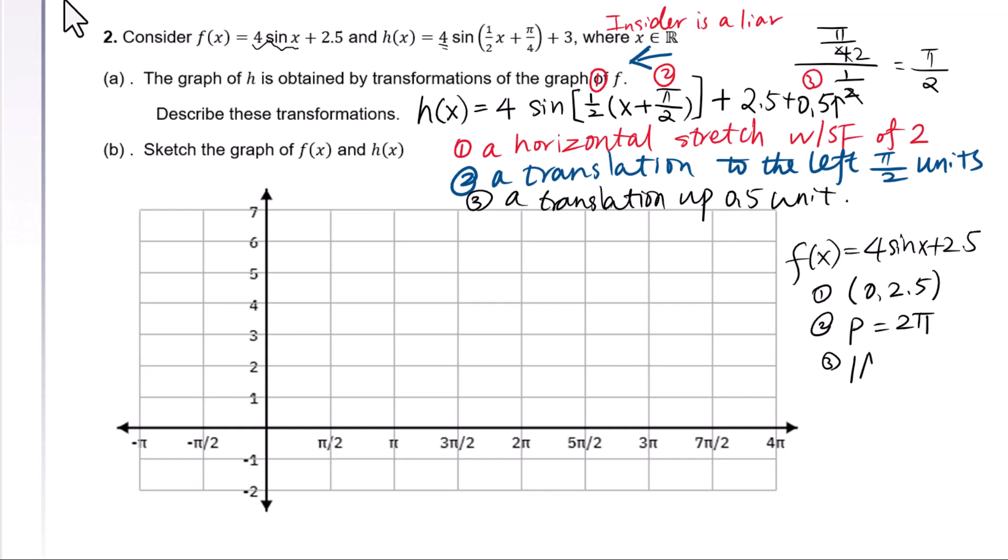Minimum equals 2.5 - 4 = -1.5. Maximum equals 2.5 + 4 = 6.5.